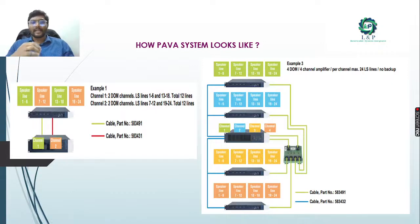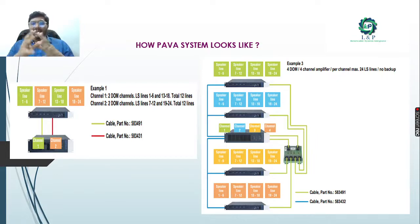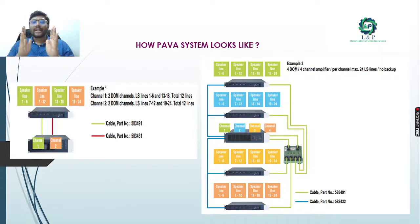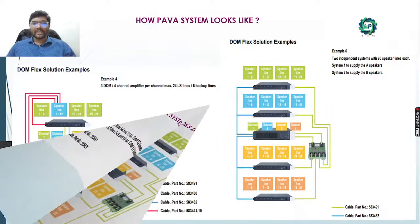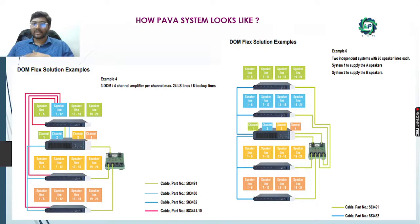In many ways we can design the PAVA system, but basically it has an amplifier and central amplifiers. Based on the number of speaker lines and number of channels, there are many varieties. These are some examples of PAVA systems with different types of channel amplifiers.